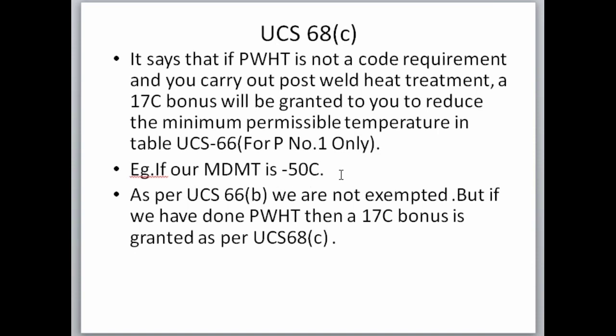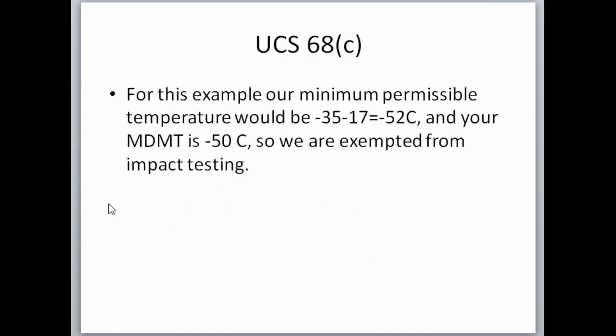For example, consider a pressure vessel with an MDMT of minus 50°C, made of SA516 Grade 70 material, with a thickness of 25 mm (1 inch). Per UCS66B (coincidence ratio), we are not exempted from impact testing. However, if PWHT has been performed, a 17°C bonus is granted per UCS68C. The permissible MDMT without impact testing from Table UCS66 for this material is minus 35°C. Subtracting 17°C gives minus 52°C. Since our MDMT of minus 50°C is warmer than minus 52°C, we are exempted from impact testing.